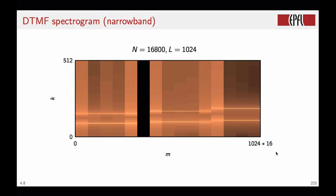If we increase the size of the window to 1024, so four times larger, then we have an extremely narrowband spectrogram. You see now that the frequencies are localized extremely precisely, but on the other hand, the time resolution is very poor. We're completely missing the silence here in the beginning, for instance, and the silence between these two digits.